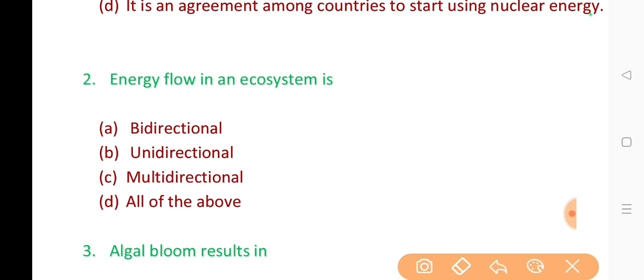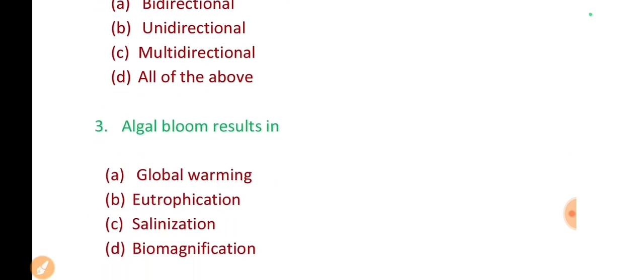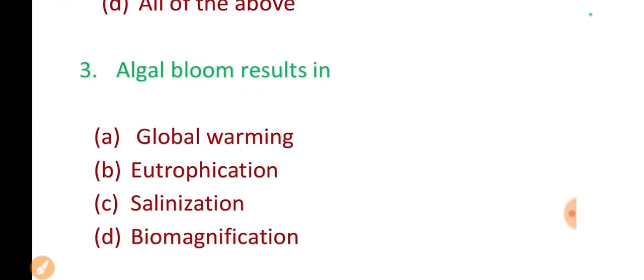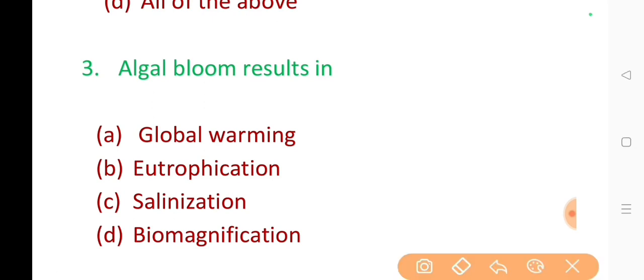2. Energy flow in an ecosystem is? The correct answer is option B. Unidirectional.